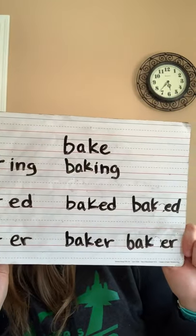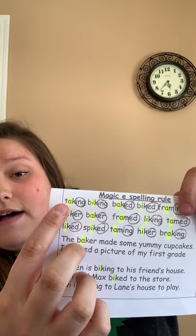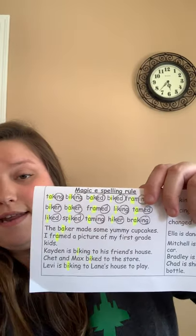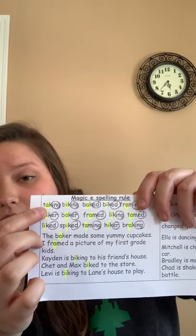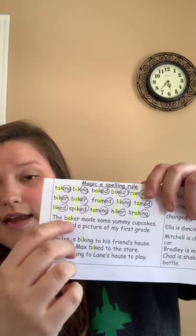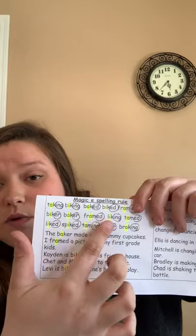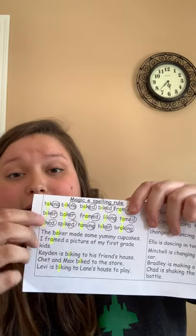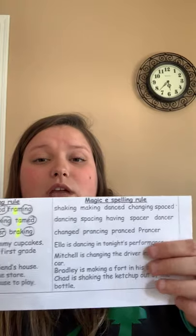For your Orton Gillingham, you have two boxes to complete for the magic E rule. What I want you to do for these boxes is highlight the vowel and circle the ending. Highlight the vowel, circle the ending. We know that the vowel in all of these words is going to be long, or say its name, because these are magic E words — and magic E words make the vowels say their name. Do the same thing in this box over here. You'll have two boxes to practice the magic E spelling rule.